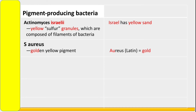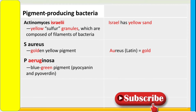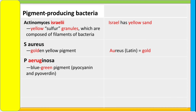The last bacteria is Pseudomonas aeruginosa. This bacteria produces blue-green pigment — that's pyocyanine and pyoverdine. So we have blue-green, and now we have all the colors covered.